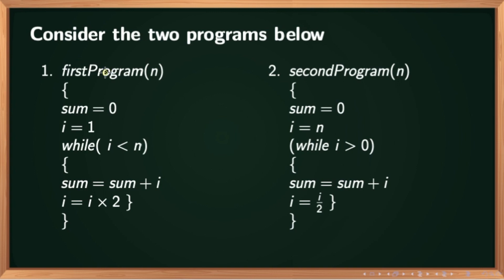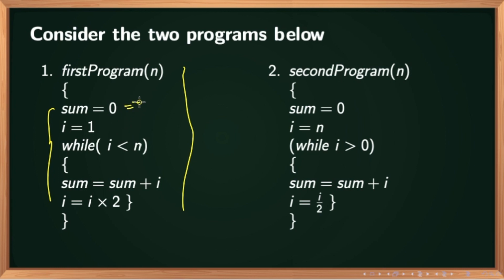We have two programs here and we need to find out the running time of these programs. To find out the running time, we need to find out how many times each instruction is going to get executed. The first instruction sum = 0 is going to get executed exactly one time, taking one unit of time. The next instruction i = 1 is also going to take one unit of time. Now we have a while loop, and we need to find out how many times this while loop is going to get executed.